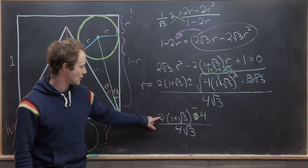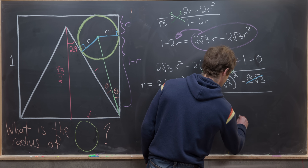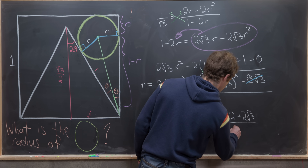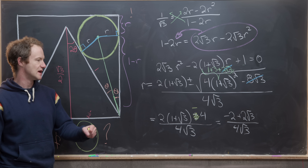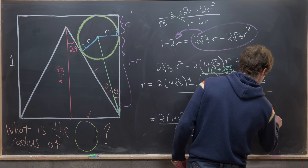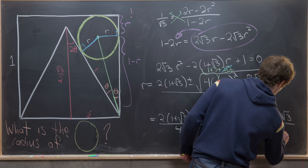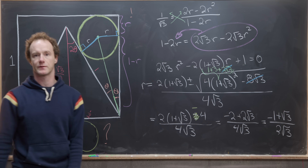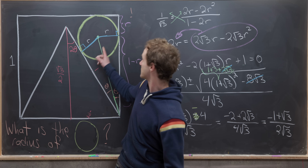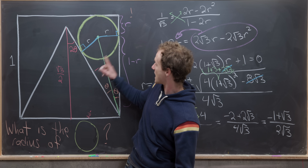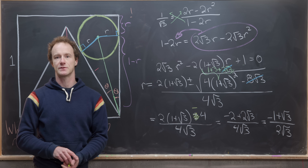Factoring a 2 from the numerator, we get r = (√3 − 1) / (2√3). That is the radius of the circle inscribed between the equilateral triangle and the sides of the unit square.